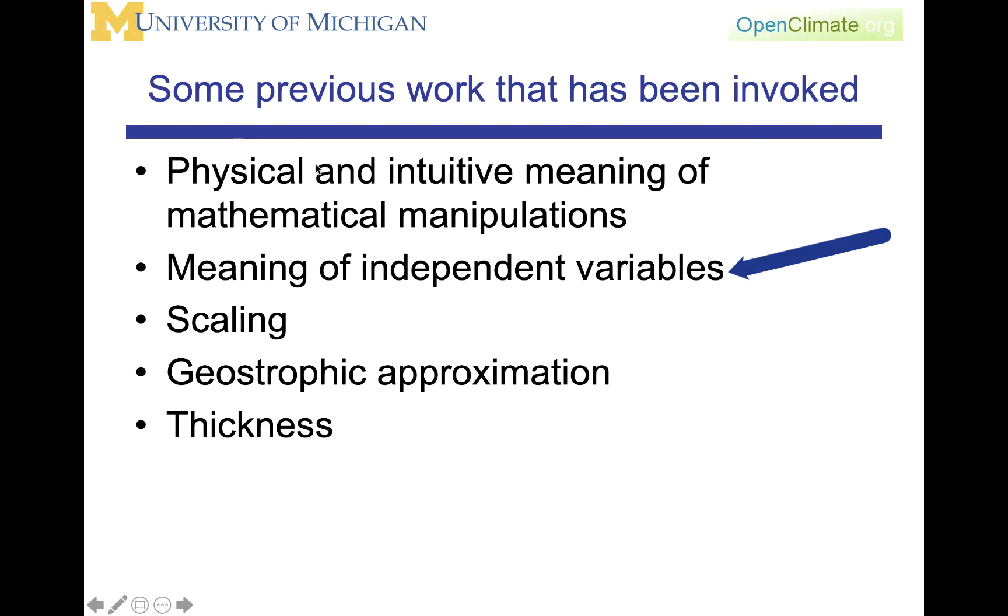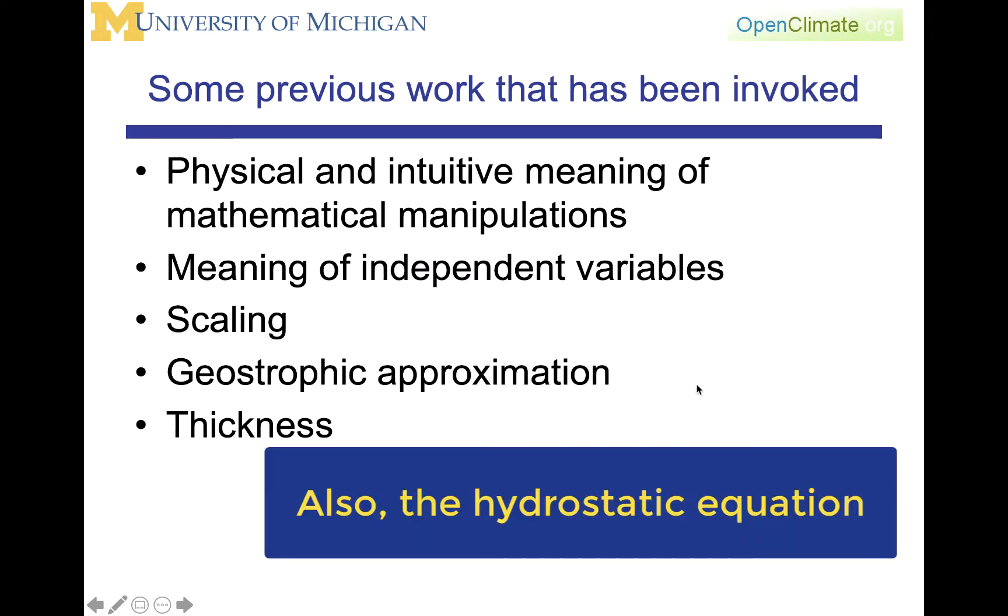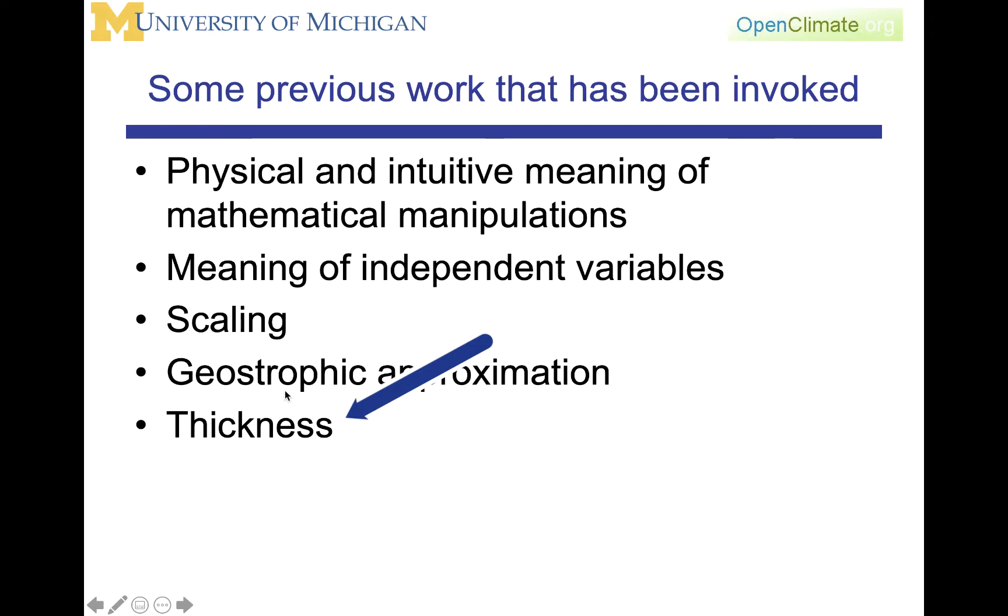With that, we're now seeing some of the advantages, some of the potential simplicities that come from using pressure as a vertical coordinate. This derivation also relies on our scaling arguments. It relies on the geostrophic approximation that came from those scaling arguments. And we have introduced this idea of the thickness, which we studied earlier when we were looking at the derivation of geopotential and what does geopotential mean.